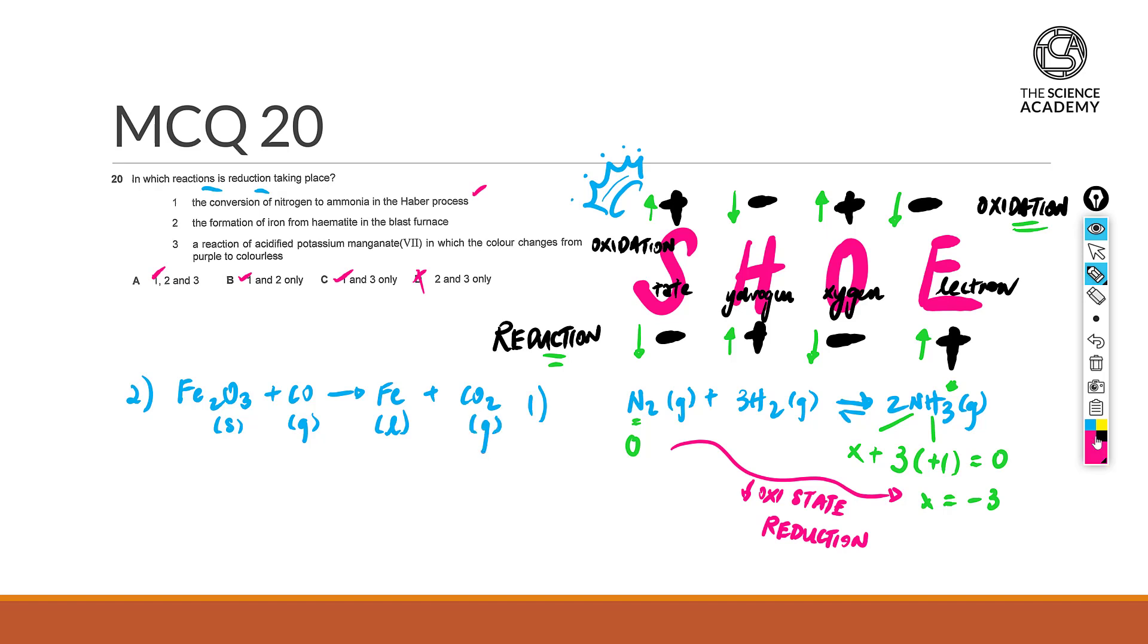Now, balancing of the equation, we're going to have 3, 2, and 3. Nonetheless, take a look at the oxidation state of iron. In hematite, this is that of a plus 3. But elemental iron has an oxidation state of 0. And therefore, this is once again, fair to say that there is a decrease in oxidation state.